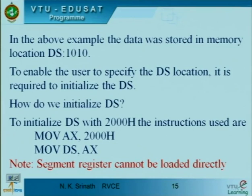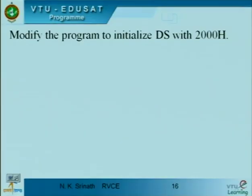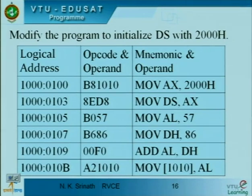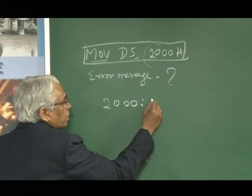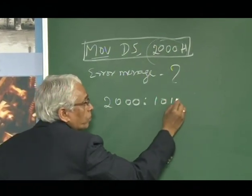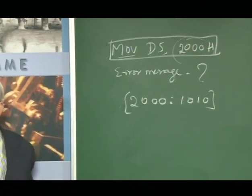So you cannot use immediate addressing mode for segment registers. The correct way is to move the immediate data into a general register first — AX is preferred because it is relatively faster — and then move from that register to DS. The program adds AH and DL registers, stores the result into DS:1010, and at the end the result is available at 2000:1010.